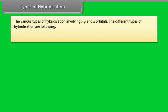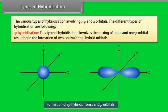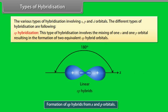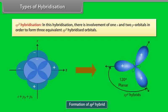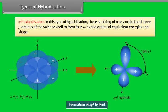Types of hybridization involving S, P, and D orbitals: SP hybridization involves the mixing of one S and one P orbital, resulting in two equivalent SP hybrid orbitals. SP2 hybridization involves one S and two P orbitals, forming three equivalent SP2 hybridized orbitals. SP3 hybridization involves the mixing of one S orbital and three P orbitals of the valence shell to form four SP3 hybrid orbitals of equivalent energies and shapes.